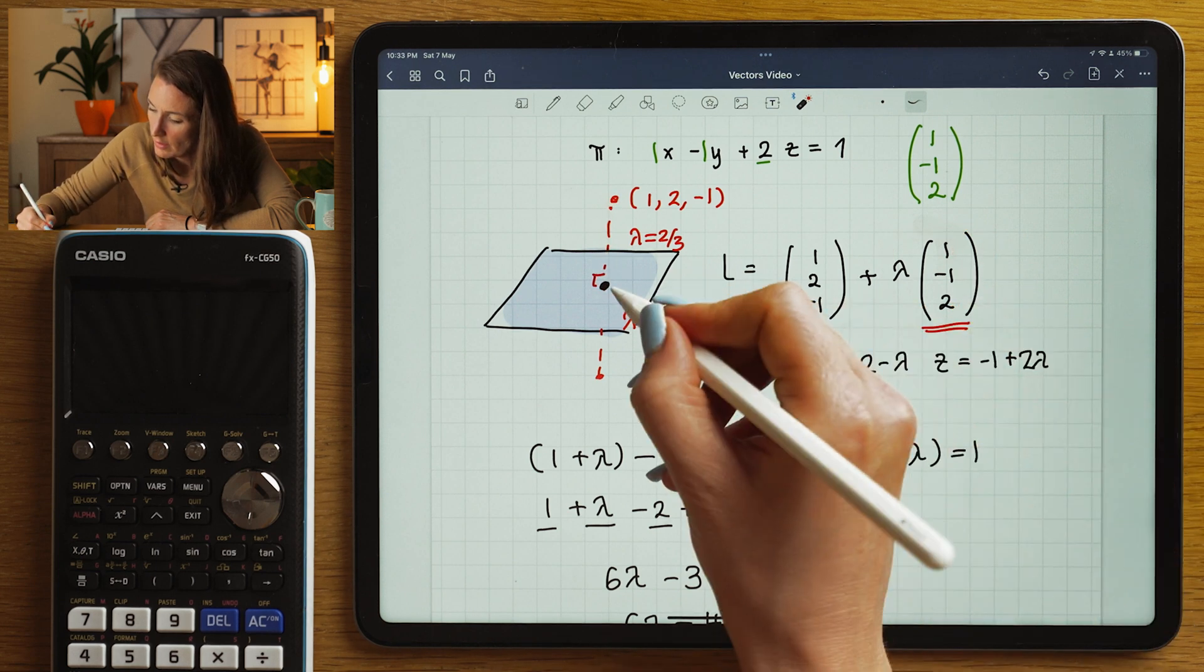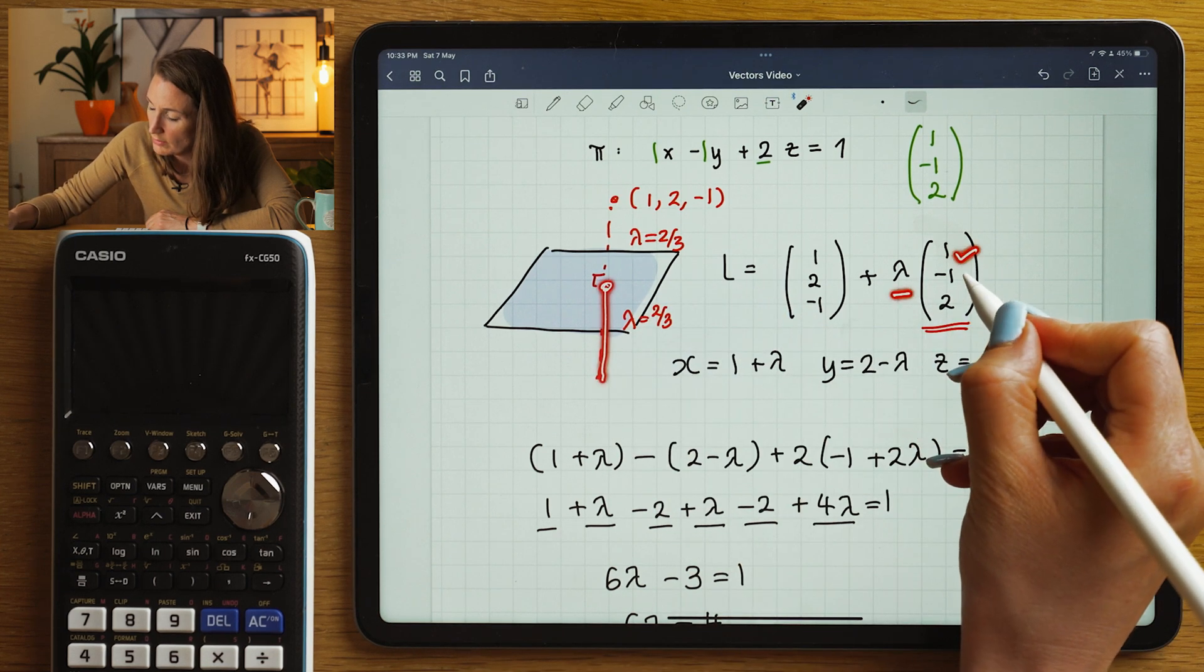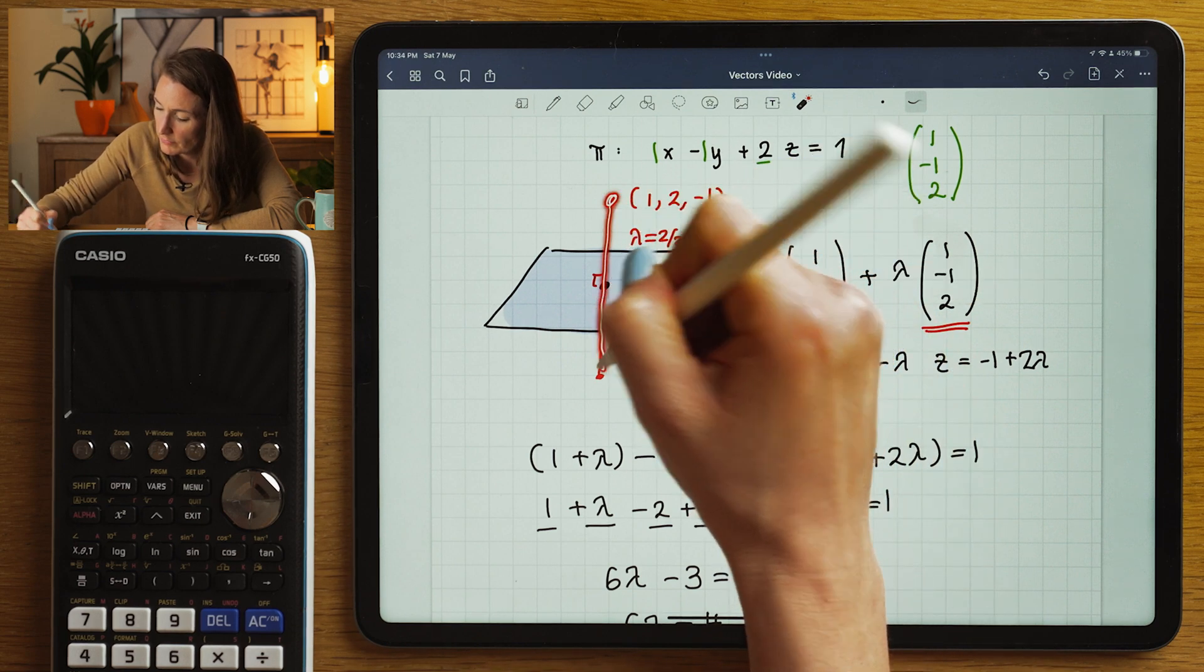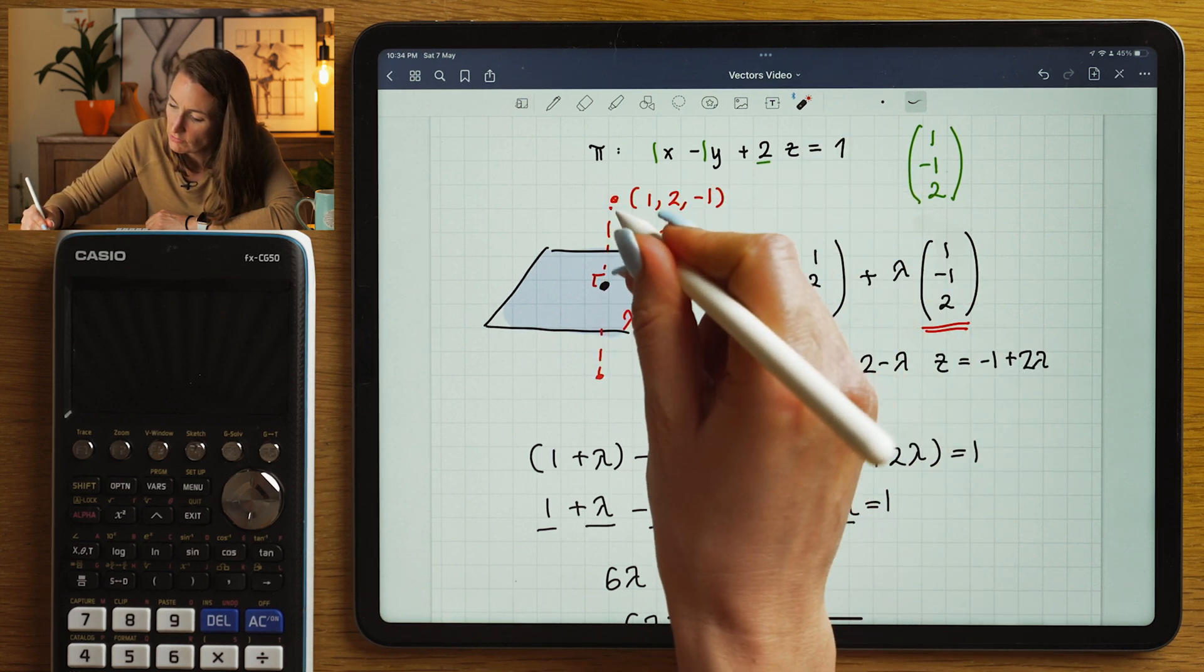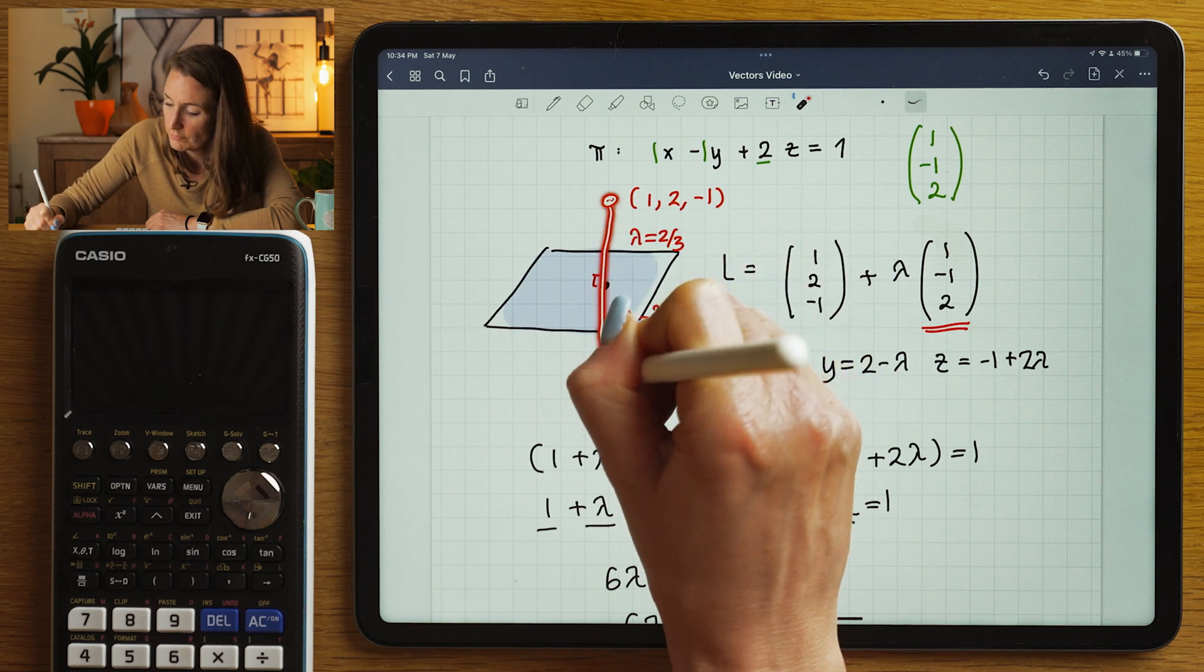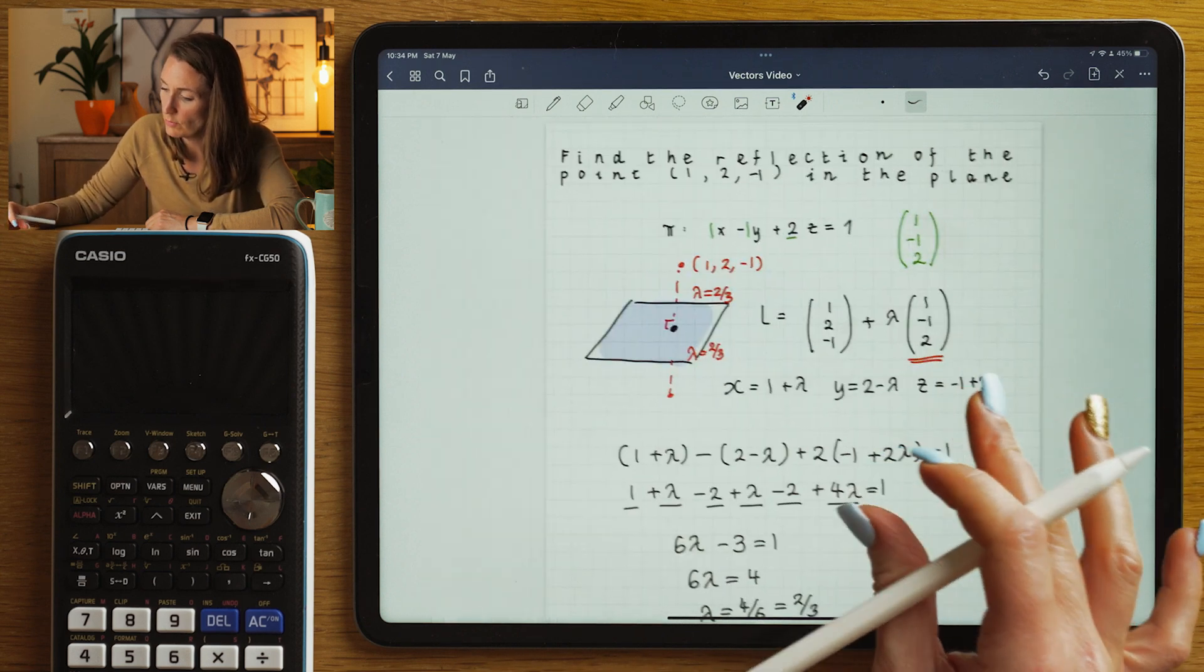Then to get from here, I need another two thirds times by (1, -1, 2). So to get from here to here, I'd need to say the vector OA added with double two thirds times this vector. So let's work out what that would be.